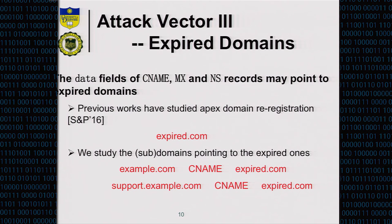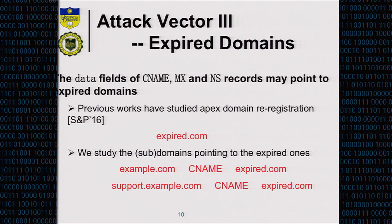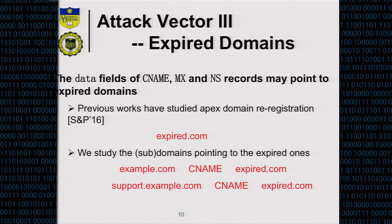The third attack vector is expired domains. For the data fields of CNAME, MX, or NS records, they may all point to expired domains. We are focused on all different kinds of domains and subdomains, especially subdomains. Even for a big company, subdomains like support.com could be pointing to expired domains, which could cause a problem too.